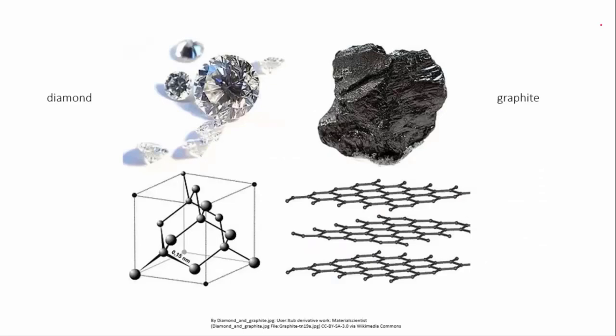Diamond and graphite, which are both forms of carbon, are examples of covalent lattice structures. You can find out more about these in another video.